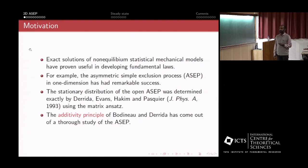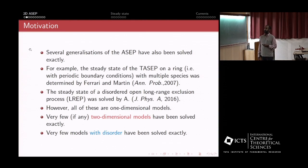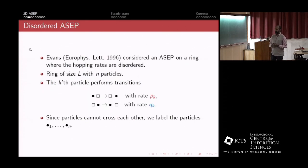This is of course a very powerful model and it has led to lots of insight. There are several generalizations that have been solved. For example, the multi-species states are solved exactly by Ferrari and Martin, and for disorder, ASEP is notoriously hard to solve, but there's certain long-range exclusion processes that I solved some time ago. But these are all one-dimensional models and very few two-dimensional models have been solved exactly.